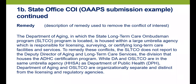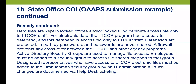Some narrative tips: if you have seven Area Agencies on Aging that are providers of long-term services and supports, that's one conflict — you don't repeat it seven times. It's one conflict that applies to seven entities, explained in the narrative describing the remedy.